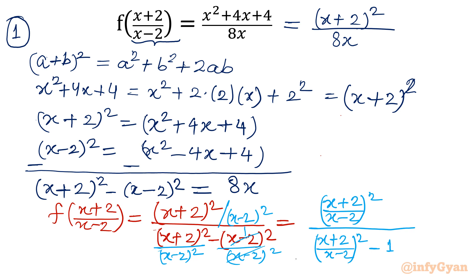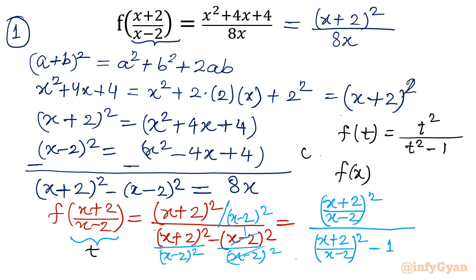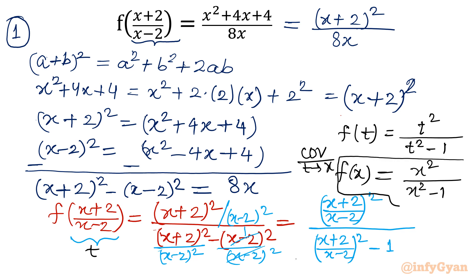Now you can see the variable here. If I replace (x+2)/(x-2) by t, then f(t) = t² / (t² - 1). So f(t) = t² / (t² - 1). Now swapping the variable t with x, fx = x² / (x² - 1). This is our first method — without substitution, using algebraic identities.